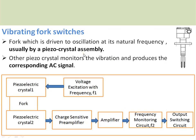This vibrating type level switch consists of two piezoelectric crystals. The property of the piezoelectric crystal is: if you give a voltage excitation to it, it will vibrate; and conversely, if you give a vibration to this piezoelectric crystal, it generates an electrical signal. As shown in the block diagram, one piezoelectric crystal gives vibration to the fork, while another piezoelectric crystal monitors these vibrations — converting electrical to mechanical and mechanical to electrical signals respectively.